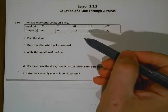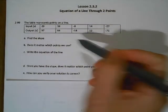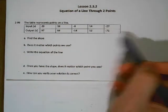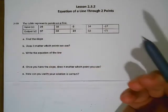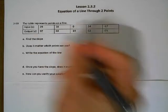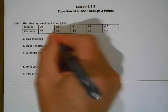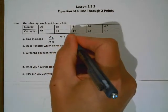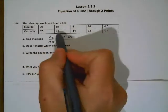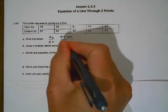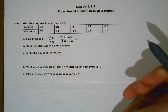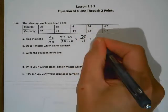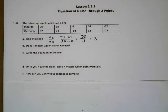So we've got a table, and this table represents points on a line. I've got my inputs, my x values, my outputs. All of these are points on the same line. Let's find the slope of that line — I'm just going to pick the first two points. I'll do 97 minus 64 over 29 minus 18, that's the change in y divided by the change in x. On top we get 33, at the bottom we get 11, so our slope is 3.